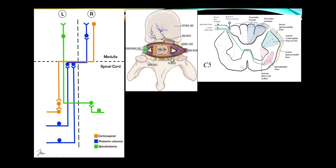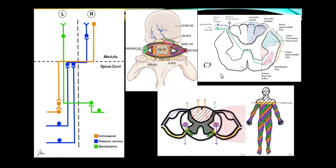Disc herniation can involve not only roots but the spinal cord. Patients will have radicular features localizing the level — for example, C6 numbness down to the thumb — and then upper motor neuron findings and sensory loss below the level of compression as the cord is compressed.